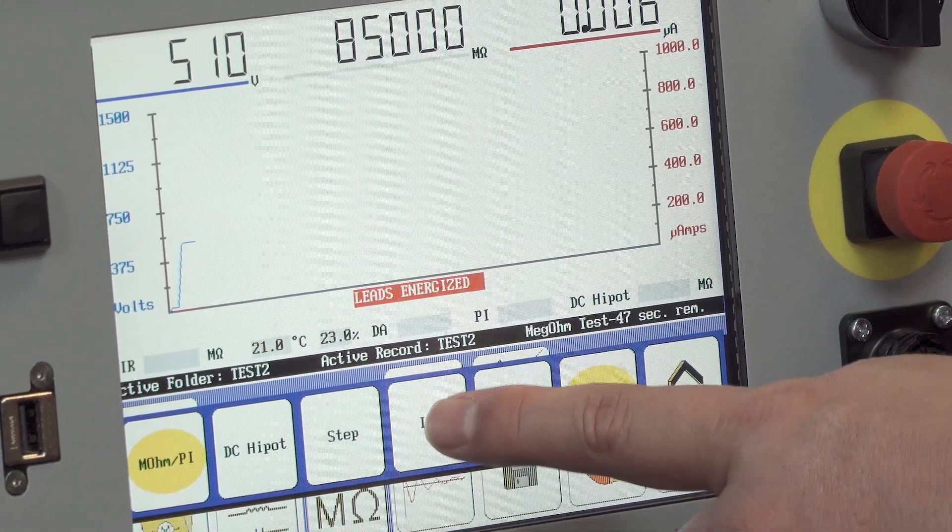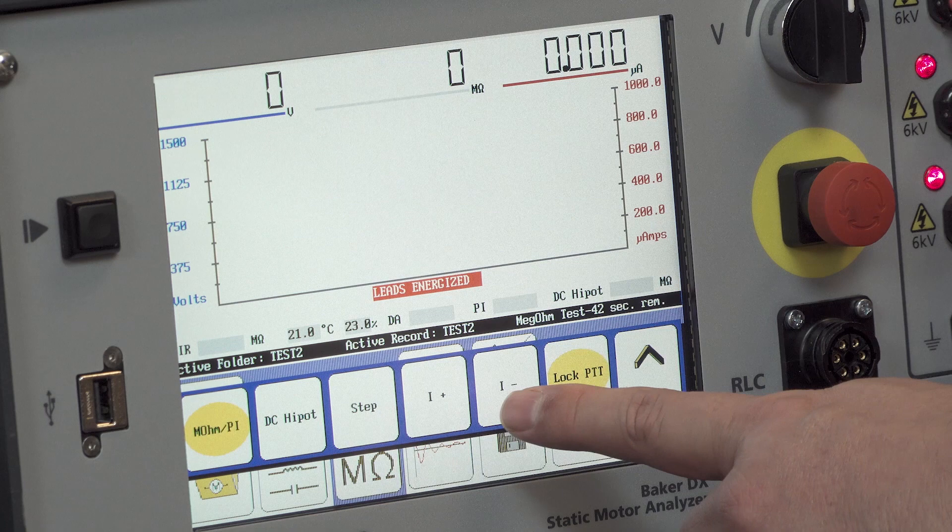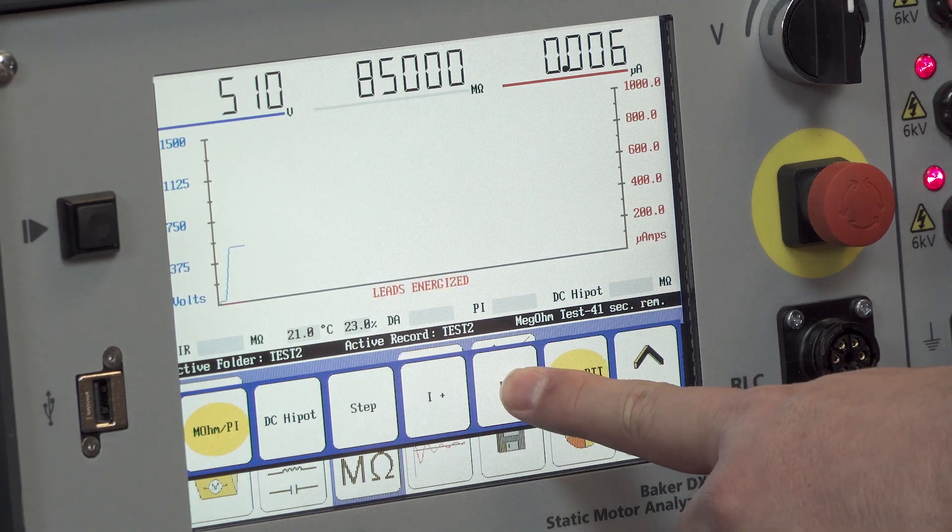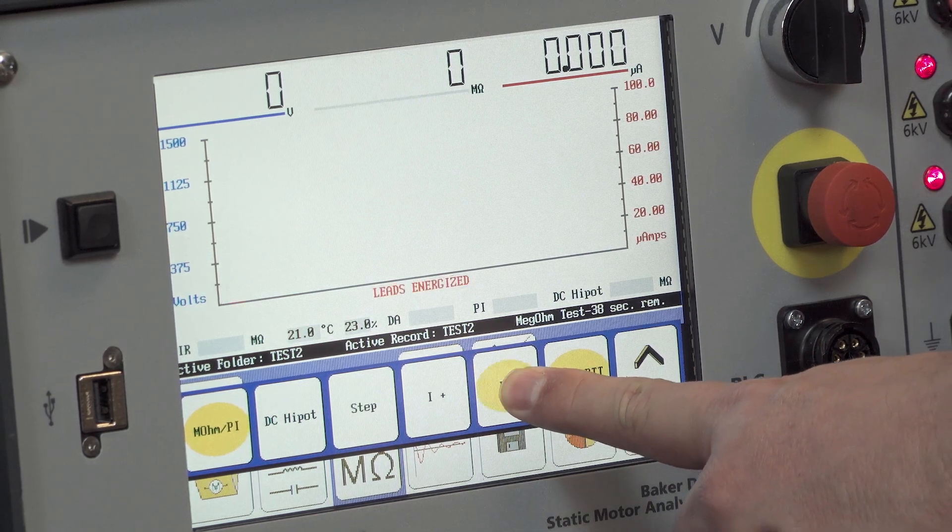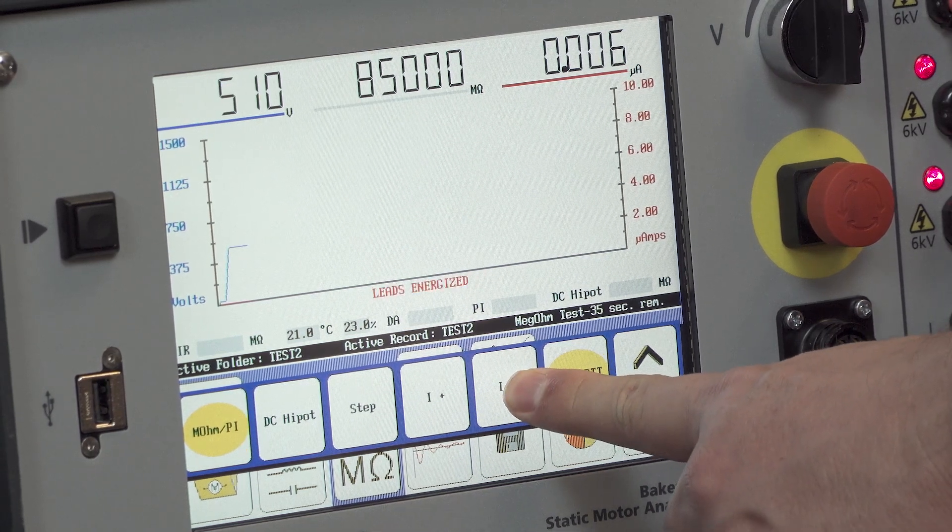You can scale the current range by pressing the I plus to increase the range or I minus to decrease the range to allow you to see the lower levels of leakage current.